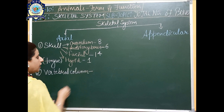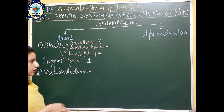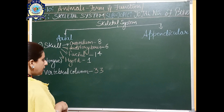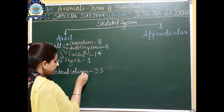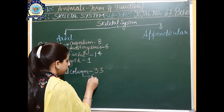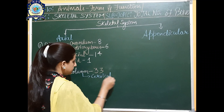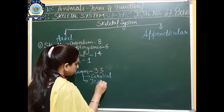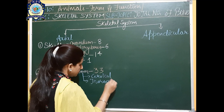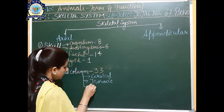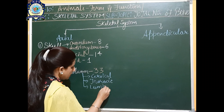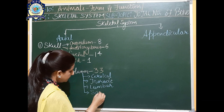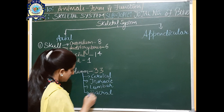Hello everyone, HIM Tutorial welcomes you to the new session. We have been doing Chapter 10, that is Animal Form and Function. Under animal form and function, we are going to discuss the skeletal system, specifically the total number of bones present in the human skeleton. So let's begin.